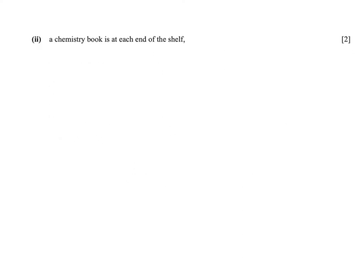Now they're asking us to find the number of arrangements with a condition that a chemistry book is at each end of the shelf. So there are still nine books in total that we are arranging, and we have a total of two chemistry books as highlighted by the question before. So either one of those two chemistry books can be here, and as a result of one being there, the other one must be here.